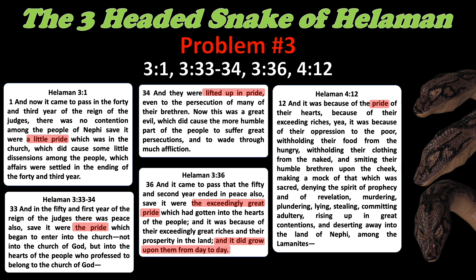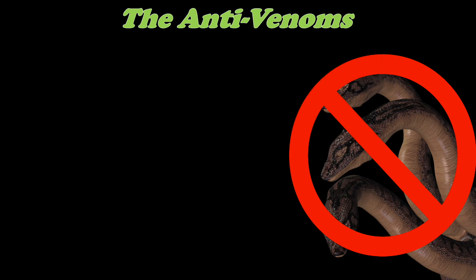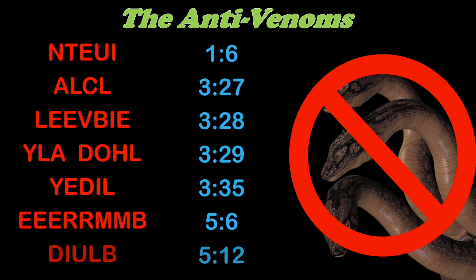Let's start to take a look at some solutions. The scriptures will never offer us a problem without the solution being somewhere nearby. There are antivenoms to these venoms. There are a couple of key words that stand out to me in these chapters — some verbs, things that we must do to protect ourselves from the three-headed snake. Here is a list of the verbs that I think are key to protecting ourselves from these vile venoms. I'm going to scramble them up and then give you the key references where they're used. Let's see if you can unscramble these and figure out what they are.